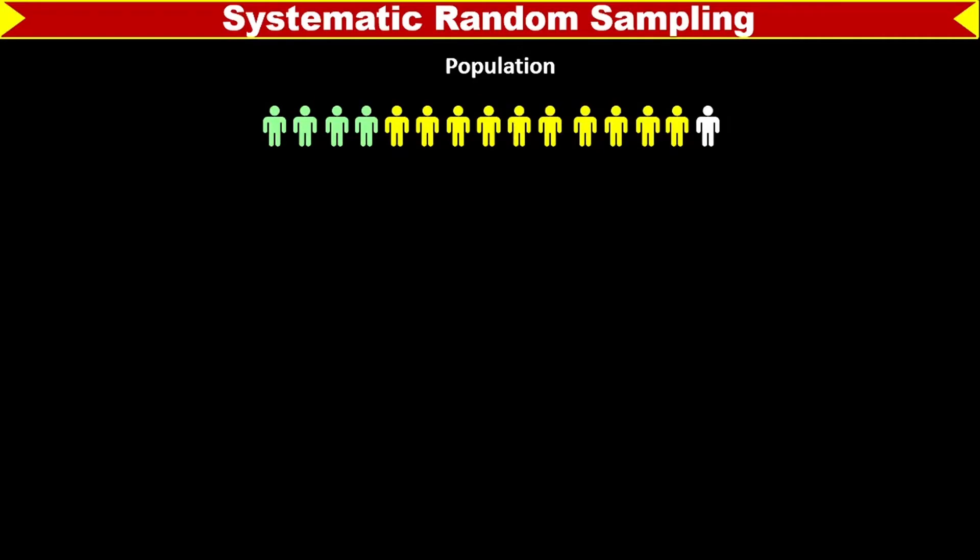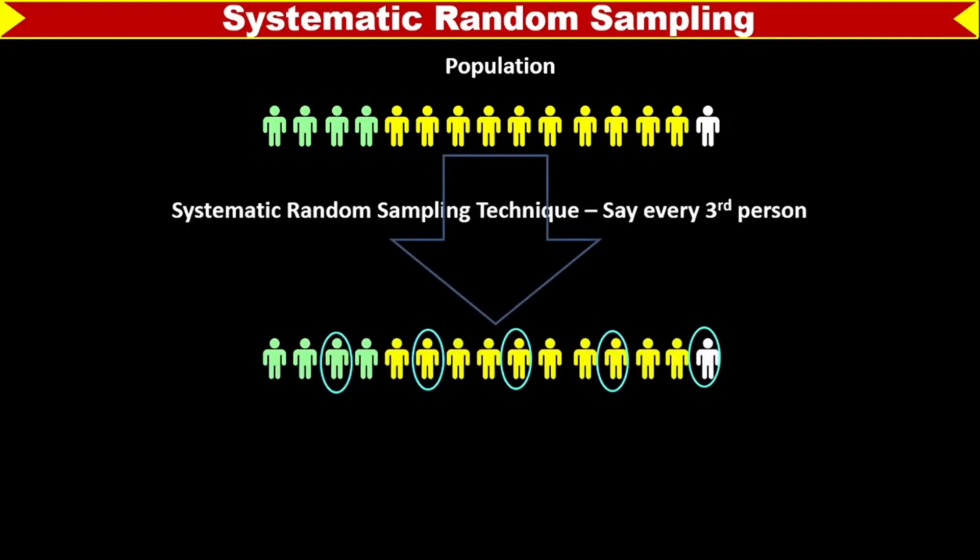Let's understand it with the help of a conceptual diagram. There's a population, and systematic random sampling technique has been applied. Every third person has been selected. We are applying the principle of systematic random sampling and the interval is 3, so every third person will be selected.